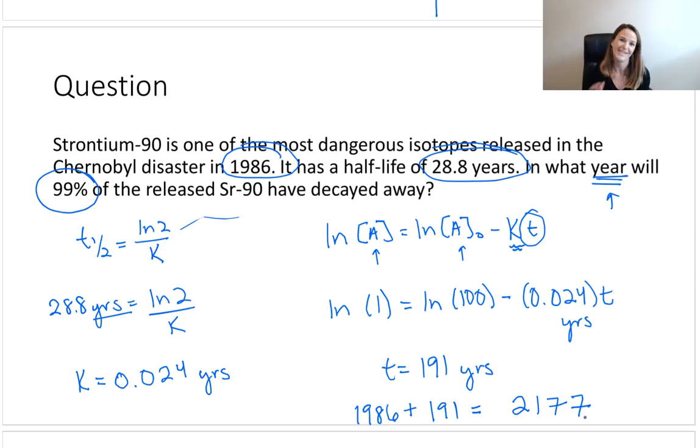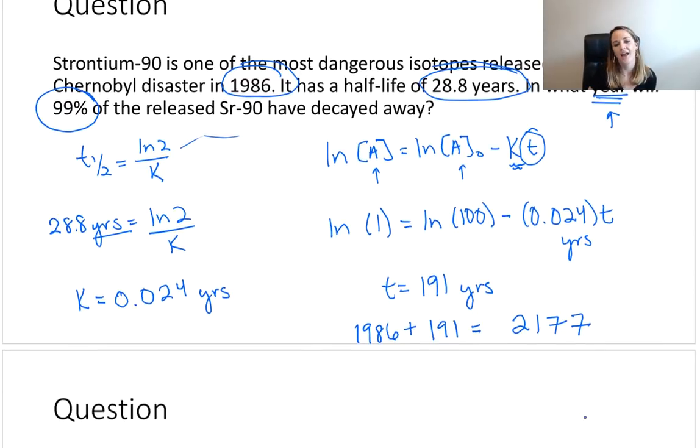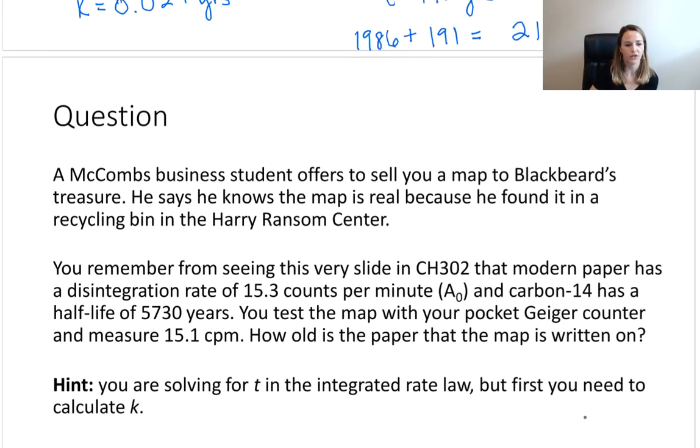There's obviously a lot more nuclear involved in that. I gave you just the tiniest overview. But I have one more problem for you. So this is just a preview. I'm not actually going to work it out here because this is what you're going to be doing in your learning exercise. But I want to just point out one thing here. A McCombs business student offers to sell you a map to Blackbeard's treasure. He says he knows the map is real because he found it in a recycling bin in the Harry Ransom Center. You remember seeing this slide in CH302 that modern paper has a disintegration rate of 15.3 counts per minute - that's your A₀, your original concentration. We know carbon-14 has a half-life of 5,730 years. You decide to test the map with your pocket Geiger counter, because who doesn't have one of those? And you measure now 15.1 CPM, counts per minute - technically it should be per gram of paper. How old is the paper that the map is written on? There's your question. Go for it. I know you can do this. I just showed you really the only way to solve first-order kinetics problems. So go for it.